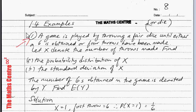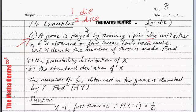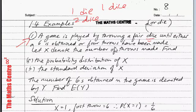Example number one. Please read the question carefully. A game is played by throwing a fair die. Some books still call it dice, but when you throw one it's called a die — one die, and two is the plural which is dice. But some books still call it dice, so let's not quarrel about that. A game is played by throwing a fair die until either a six is obtained or four throws have been made.